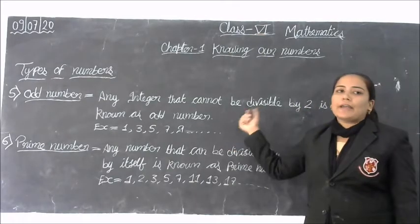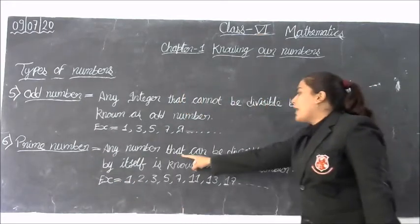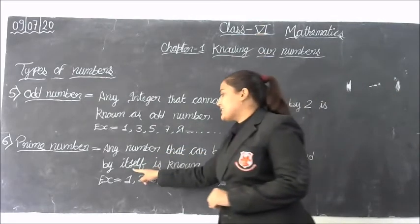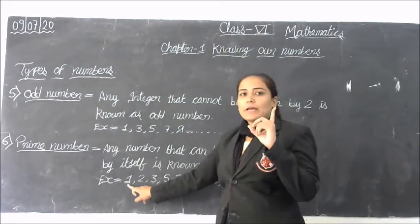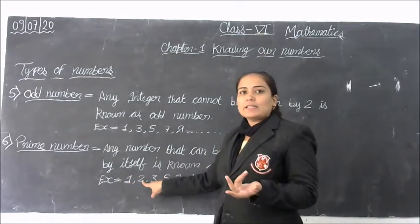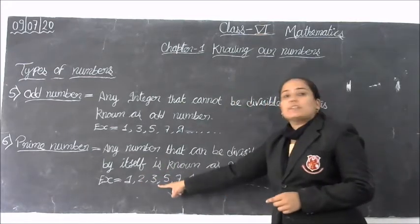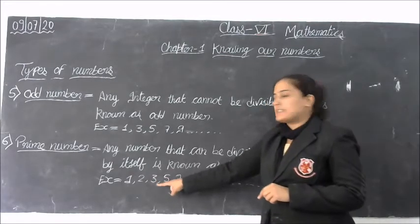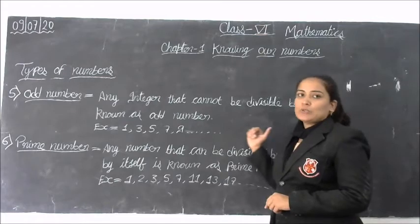Now our last definition: prime numbers. Any number that can only be divisible by 1 and by itself is known as a prime number. For example, 2 cannot be divisible by any other number — it can only be divisible by 1 and by itself. Similarly 5, 7, 11, 13, 17 and so on are prime numbers.